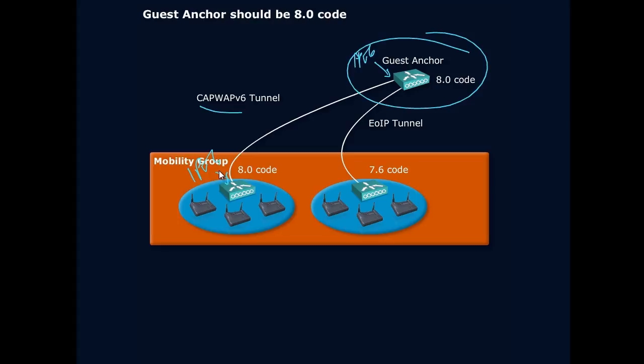We can go native IPv6. It's only when we have a mix of codes that we have to use this EOIP tunnel, and we have to use IPv4 on this side and IPv4 on this side. So a little bit of a difference. When we're using native 8.0 code, not a problem — we can use IPv6 on the ends of these tunnels.